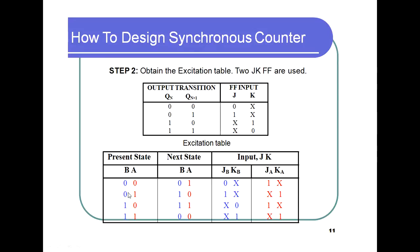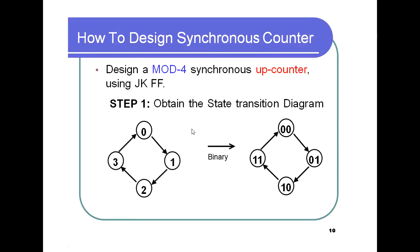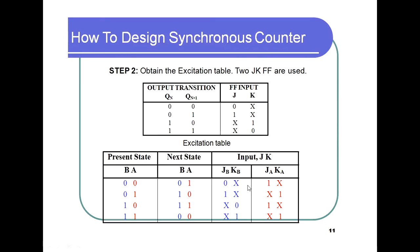Taking the BA values, the present state and next state are filled in. Using the excitation table values, for each BA combination the JA, KA, JB, KB entries are determined. Then we obtain and simplify the functions using Karnaugh maps. For A and B, the K-map entries are filled: 0, X, 1, X for JB and 0, 0, X, X for KB.